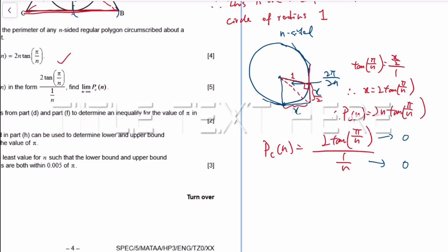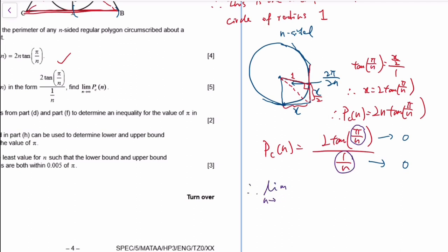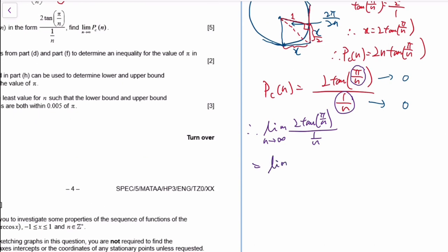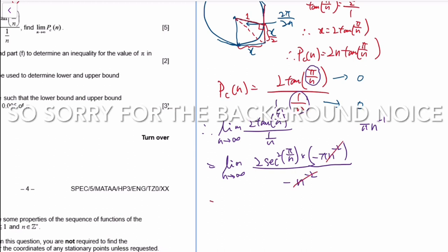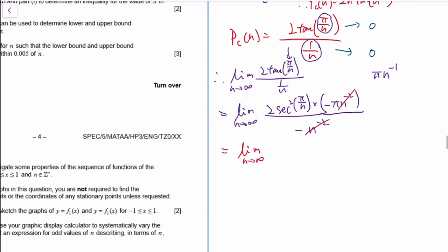When n goes to infinity, π/n approaches zero, and tan(0) = 0. Obviously the denominator is also zero. So applying L'Hôpital — differentiate top and bottom with respect to n. If we differentiate tan(π/n), we get sec²(π/n) times the derivative of the inside, which is −πn⁻². Differentiate the bottom, which is n⁻¹, giving −n⁻². The negatives and the n⁻² cancel, leaving 2π·sec²(π/n).